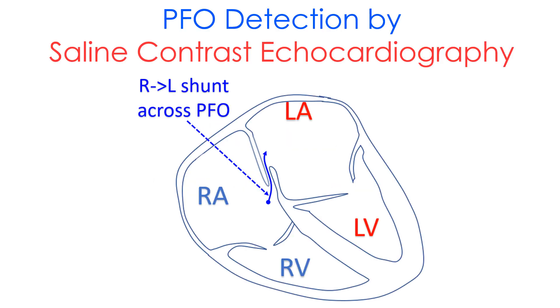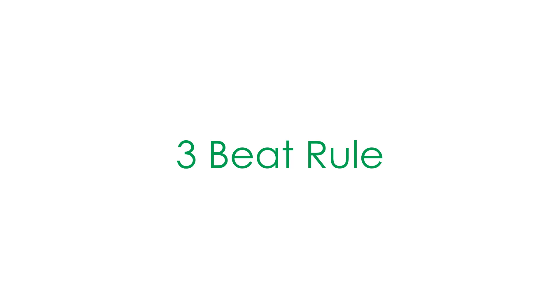Patent foramen ovale can cause paradoxical embolism and stroke. Hence, in every case of stroke it is necessary to look for a PFO. PFO typically shunts right-to-left at the end of a Valsalva maneuver. Hence, injection of agitated saline bolus at the end of a Valsalva maneuver and detection of micro bubbles in the left atrium within three cardiac cycles from the right atrial appearance would suggest presence of a PFO.